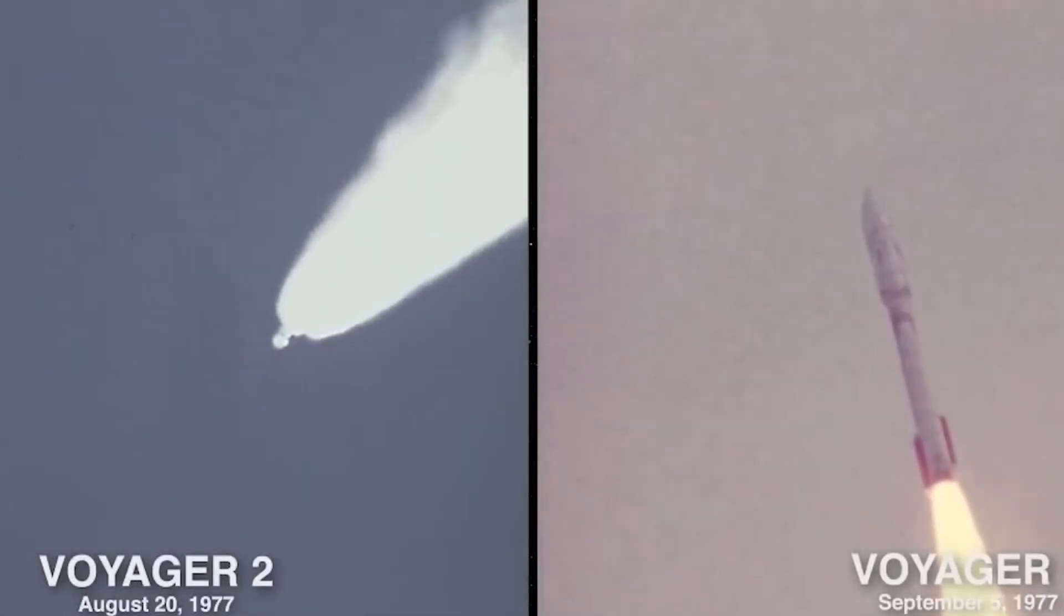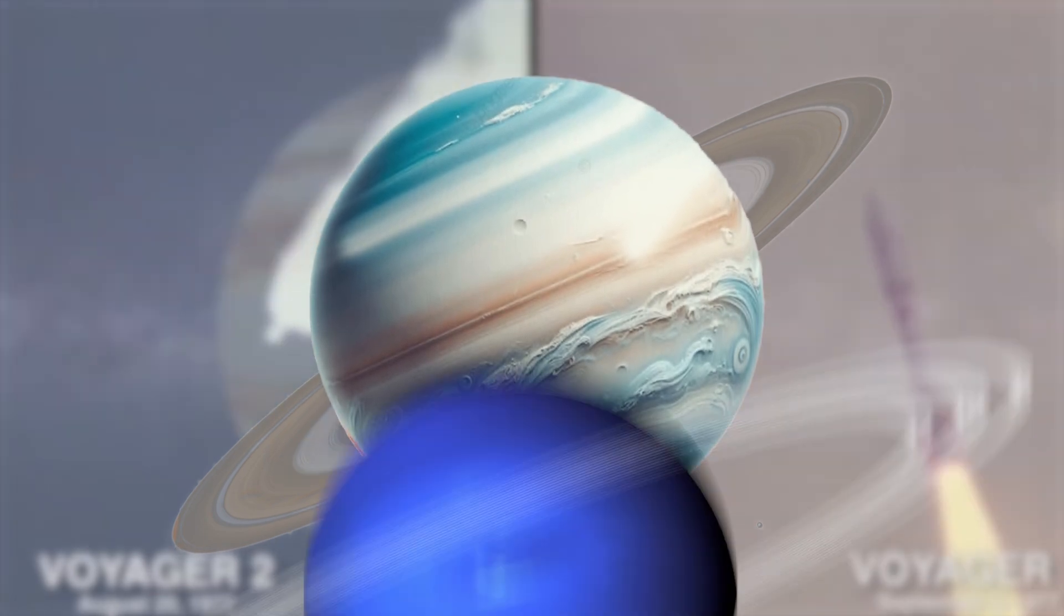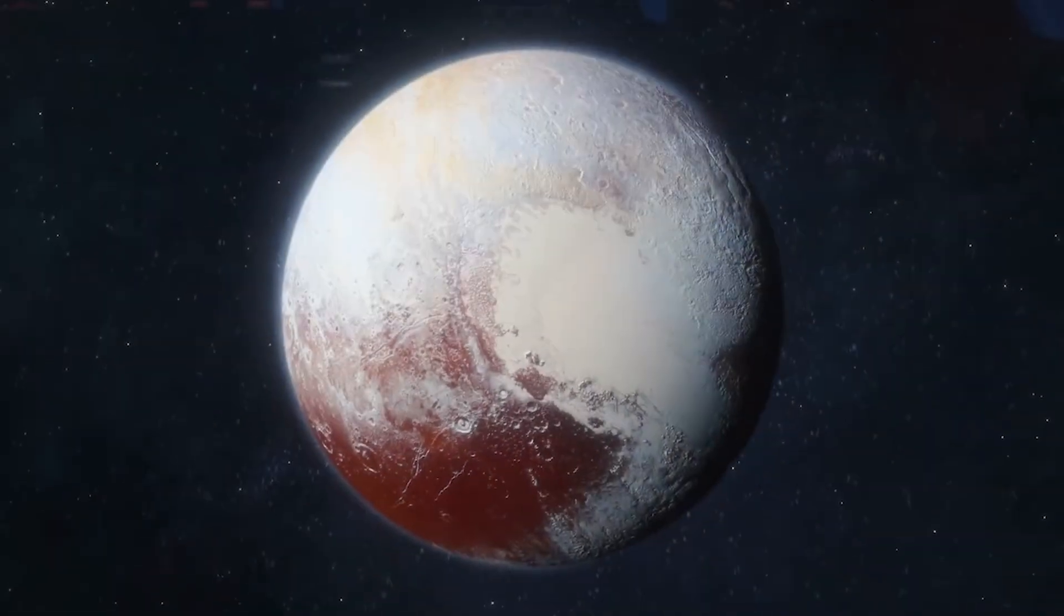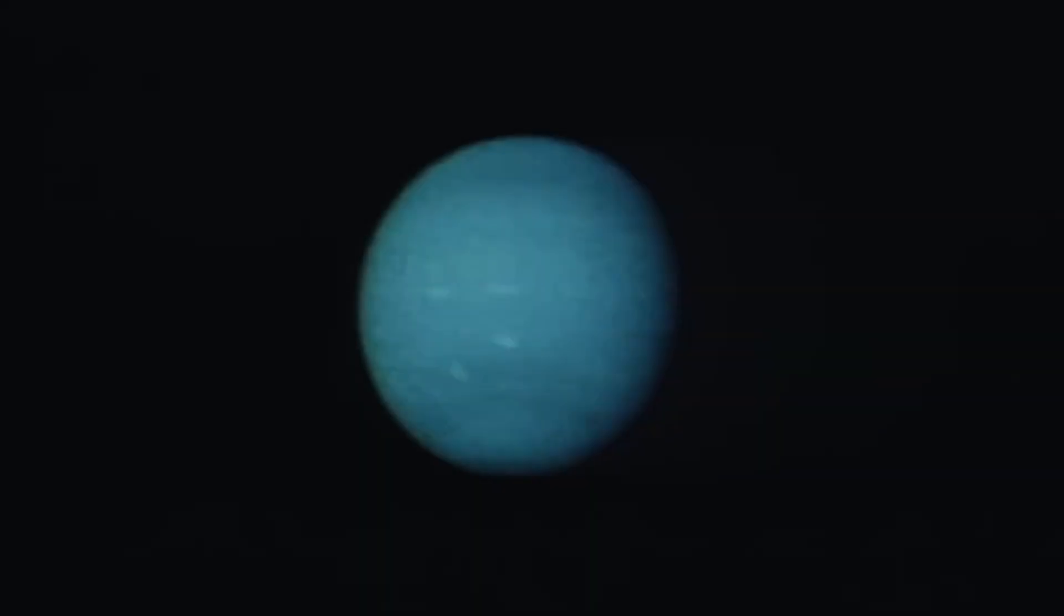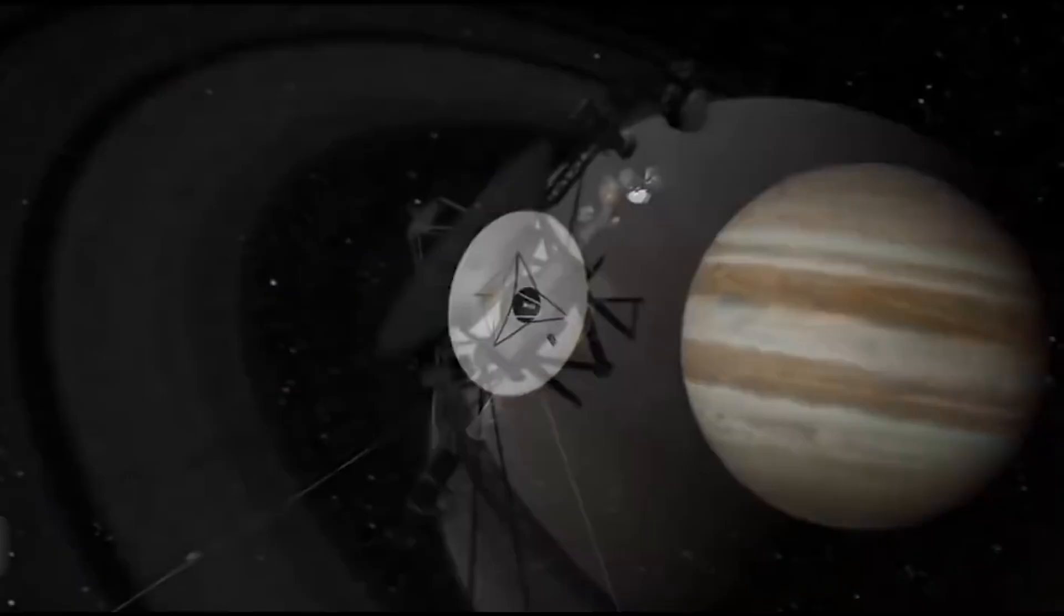Voyager 1 and Voyager 2 flew past Jupiter, Saturn, Uranus, and Neptune, discovering active volcanoes on distant moons and capturing the first close-ups of ice giants billions of miles away. But the planetary tours ended in 1989.